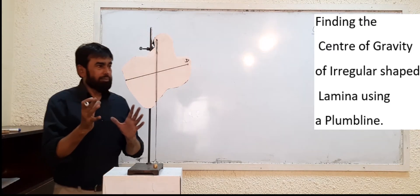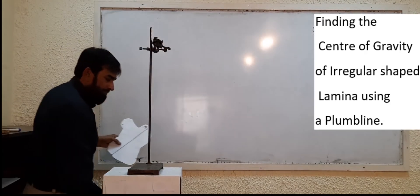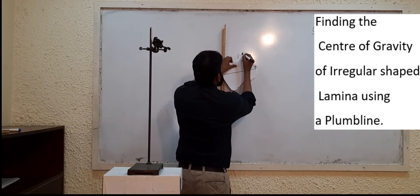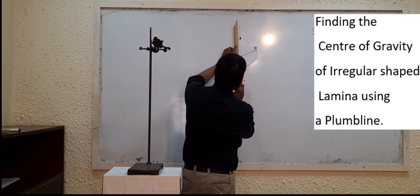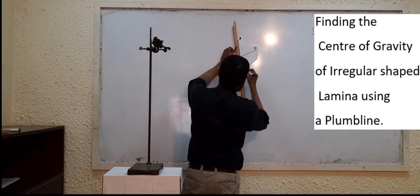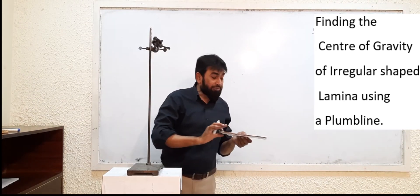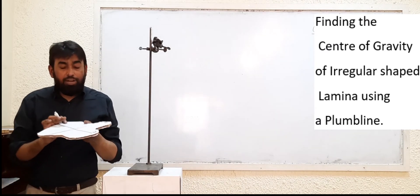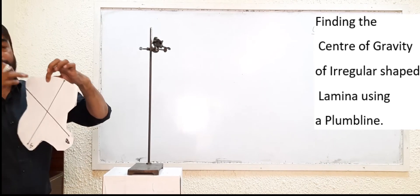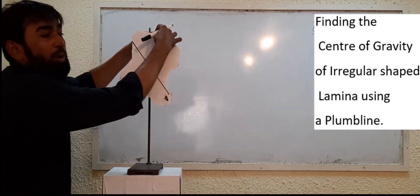Okay, repeat the same procedure again. How many times should it be repeated? It must be repeated at least three times. I am naming this hole as B. While drawing two lines I am getting intersection points, but for accuracy you must take a third point — two points are not sufficient.